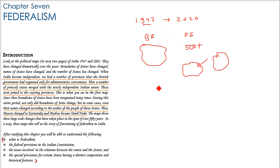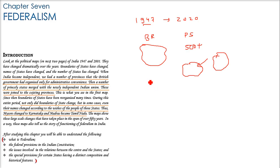Since 1947, we have seen that many provinces have changed their names. The names are also changed and the boundaries are also changed, and this depends on the wishes of the people, the political parties, the aspirations of the people, and also administrative convenience.